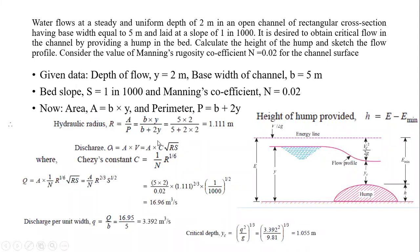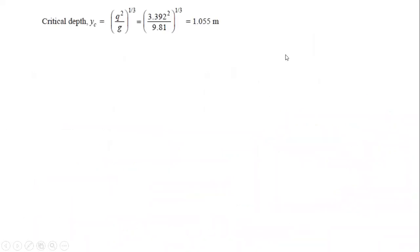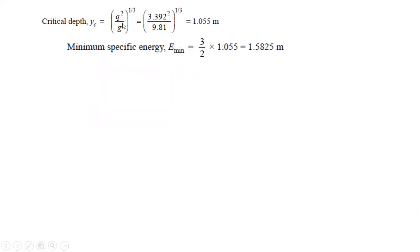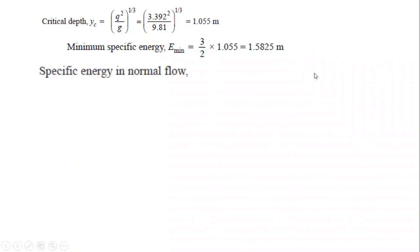These parameters are essentially required to find the specific energies at both sections. The critical depth is 1.055 m. The minimum specific energy E_min is related to critical depth as E_min = (3/2) × yc = 1.5 × 1.055 = 1.5825 m. That is the minimum specific energy.